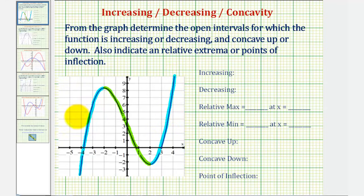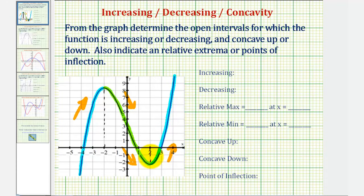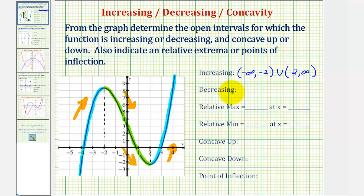Notice how it changes from increasing to decreasing at x equals negative two. Therefore the function is increasing over the open interval from negative infinity to negative two, and also on the open interval from two to infinity. It's decreasing over the open interval from negative two to positive two.